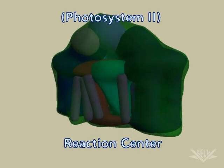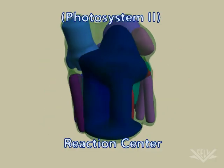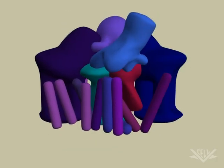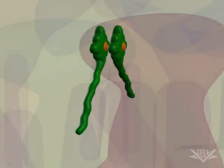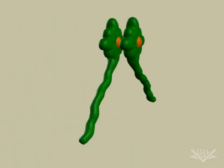The reaction center of Photosystem II consists of multiple proteins and pigment molecules. At the heart of the reaction center is a special pair of chlorophyll molecules, P680, which donate an electron to the electron transport system.